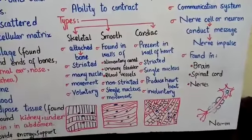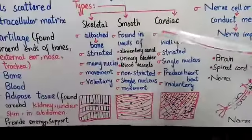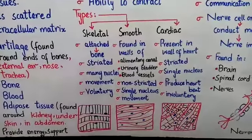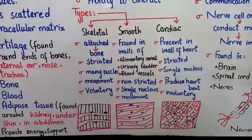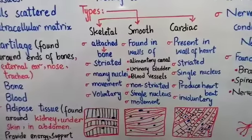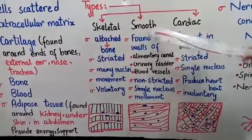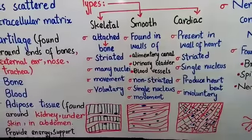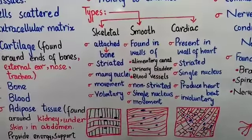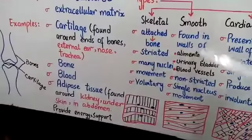The next type is smooth muscles. The digestive pathway, which starts from your mouth and ends at the anus — the food pathway — its walls are made with smooth muscles. The urinary bladder, which is a muscular sac that stores urine temporarily, also has walls made with smooth muscles. Blood vessels — arteries, veins, and capillaries — are also made with smooth muscles.